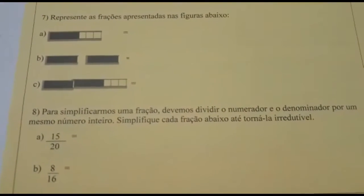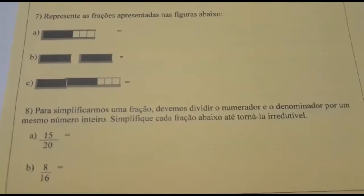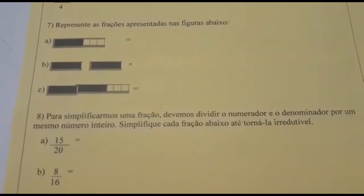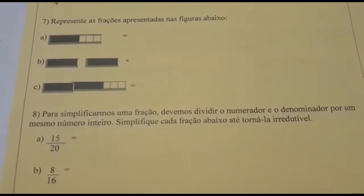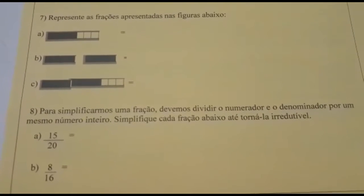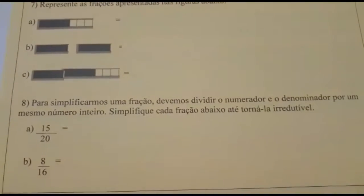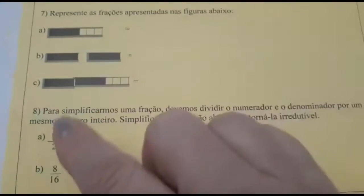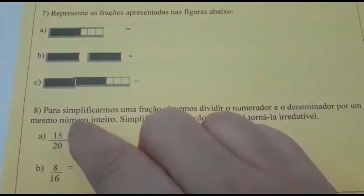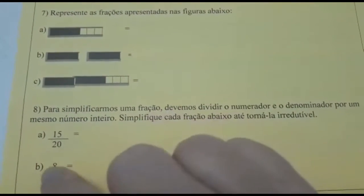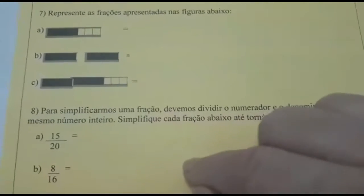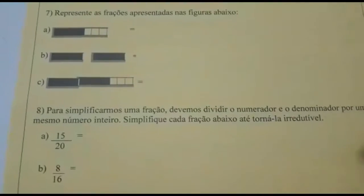Número 8: Para simplificarmos uma fração, devemos dividir o numerador e o denominador por um mesmo número inteiro. Simplifique cada fração abaixo até torná-la irredutível. Vocês vão simplificar esses números até não dar mais. Letra A: 15 vinte avos, e letra B: 8 dezesseis avos. Vocês vão simplificando até não dar mais.